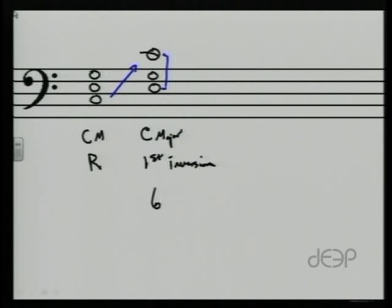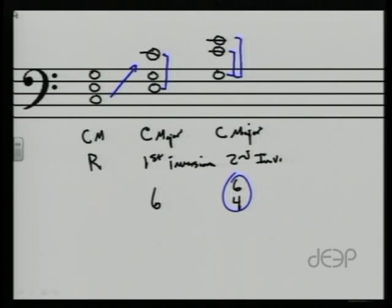Then, our other option would be to leave the G on the bottom, and move the other two notes up. And this would still be a C major chord, but this is second inversion. And it's sometimes known as a six-four inversion, because the distance between this note, the bottom note to the root is a fourth. And the distance from that bottom note to the top note is a sixth. And therefore, it gets that name.